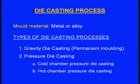The second type is pressure die casting. In gravity die casting, molten metal enters the metallic moulds by gravity, whereas in pressure die casting, molten metal enters because of external pressure we apply. Pressure die casting is further divided into two types: cold chamber pressure die casting and hot chamber pressure die casting.